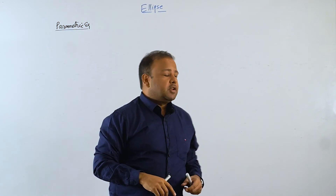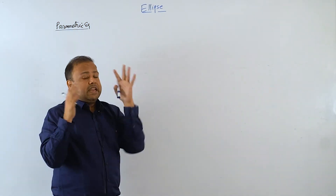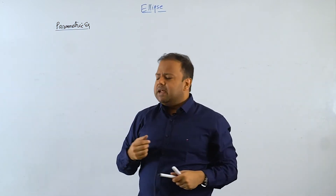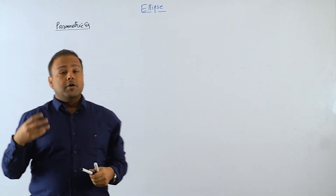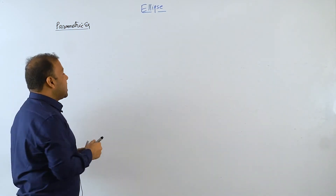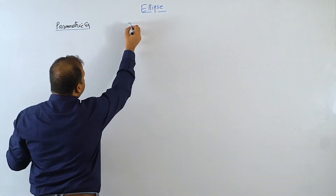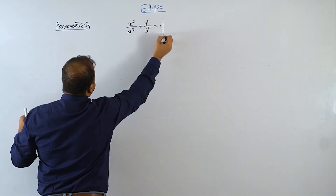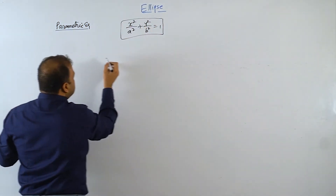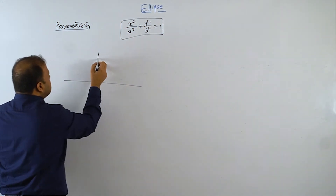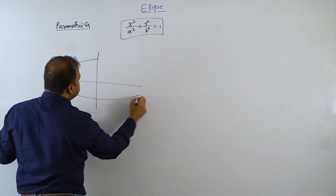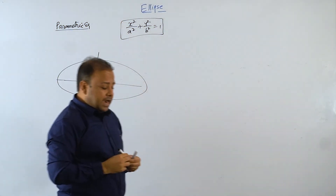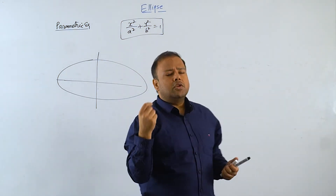Hello everyone, welcome back. In this video on ellipse, I am going to discuss the parametric equation of ellipse. The equation x²/a² + y²/b² = 1 is called the Cartesian equation of ellipse. I am going to use a point expressed in a single unknown, which is called a parametric point.